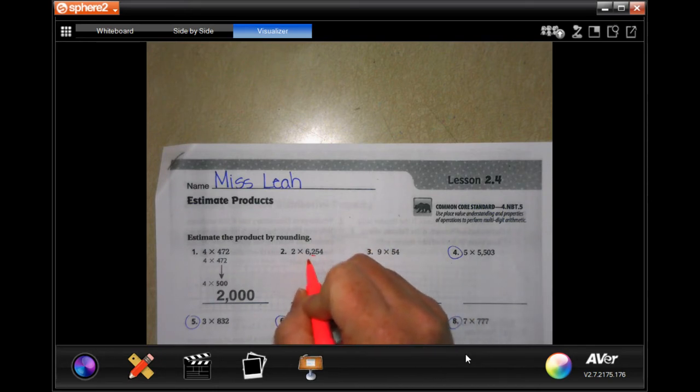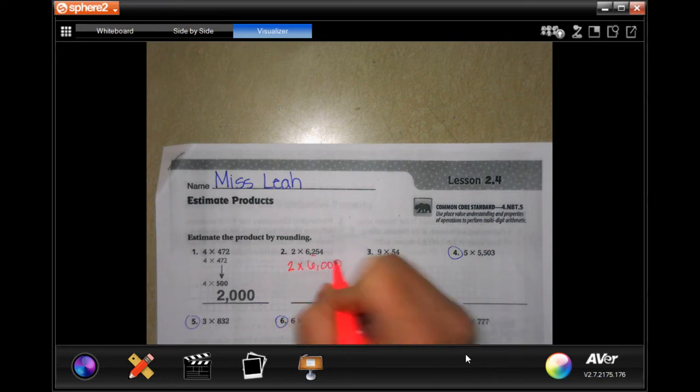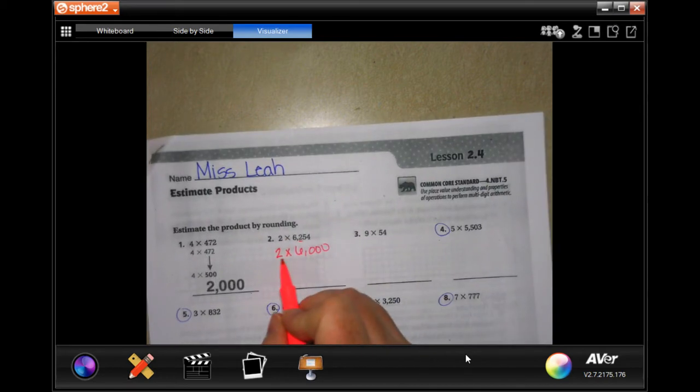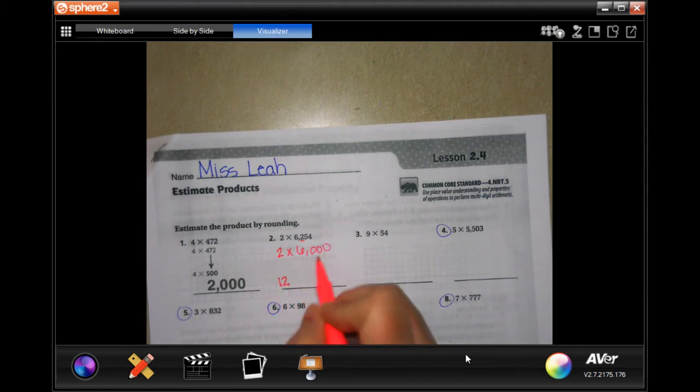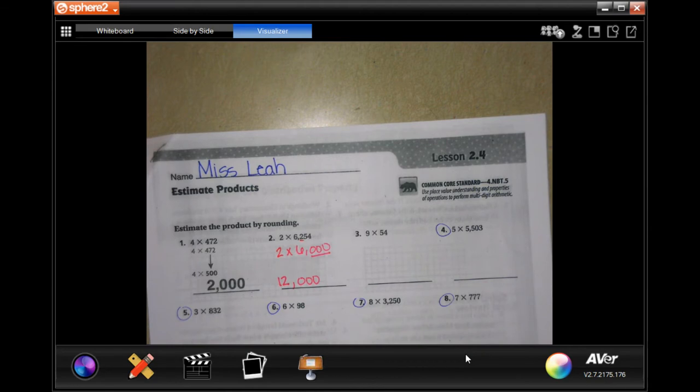So then I'm going to have 6,000 times two. And we learned the last lesson that all I have to do is multiply two times six, which is 12, and then add on those three zeros. That's an estimate.